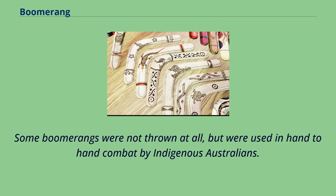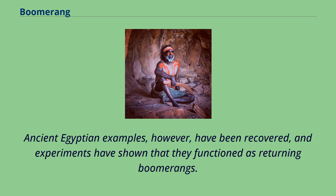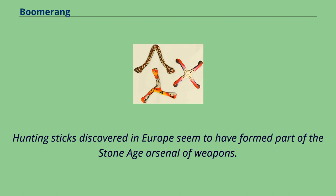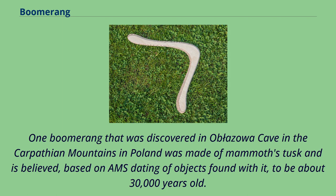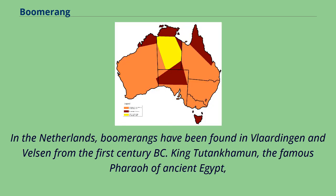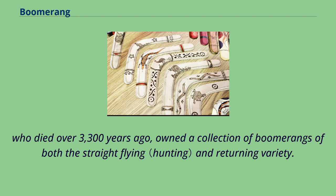Some boomerangs were not thrown at all, but were used in hand-to-hand combat by indigenous Australians. Ancient Egyptian examples have been recovered, and experiments have shown that they functioned as returning boomerangs. Hunting sticks discovered in Europe seem to have formed part of the Stone Age arsenal of weapons. One boomerang discovered in a cave in the Carpathian Mountains in Poland was made of mammoth's tusk and is believed, based on AMS dating, to be about 30,000 years old. In the Netherlands, boomerangs have been found in Vlaardingen and Velsen from the 1st century BC. King Tutankhamen, the famous pharaoh of ancient Egypt who died over 3,300 years ago, owned a collection of boomerangs of both the straight-flying and returning variety.